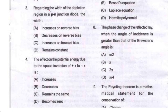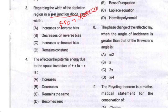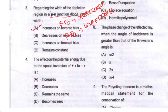Question number three: regarding the width of the depletion region in a P-N junction diode. In forward bias, the depletion region width decreases. In reverse bias, the width increases. So option A is your correct option.